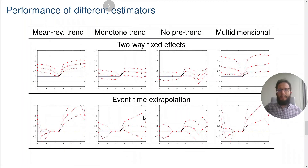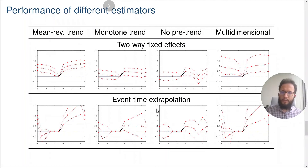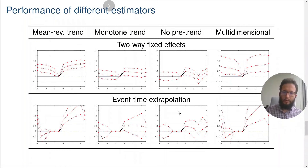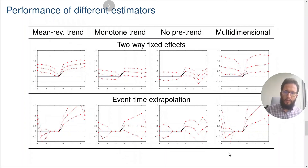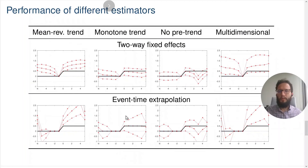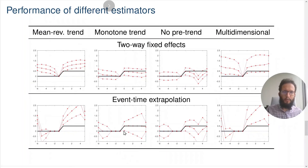Now let's look at the performance of event time extrapolation, another identification strategy without proxies or instruments. Here we approximate the dynamics of the confound with a linear trend in event time and estimate that trend using the pre-trend in the outcome before the policy is adopted. The estimator performs poorly when the confound dynamics cannot be approximated with a linear trend — it doesn't perform well in columns one, three, and four — but it performs relatively well in column two, where the confound is trending linearly in event time and can be reasonably re-approximated with a linear trend.